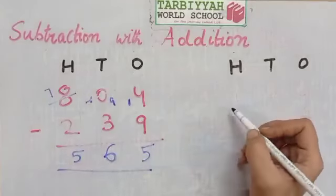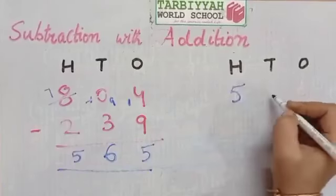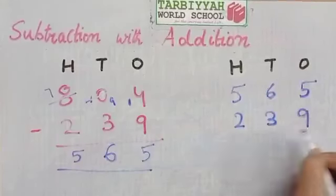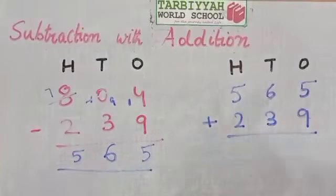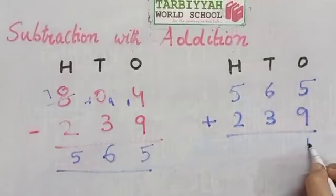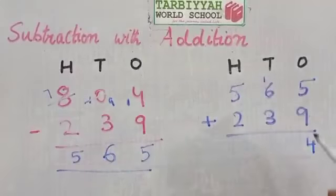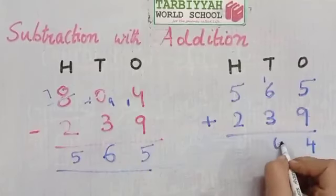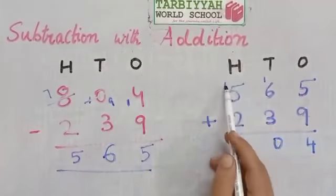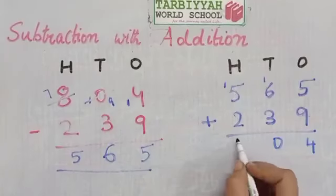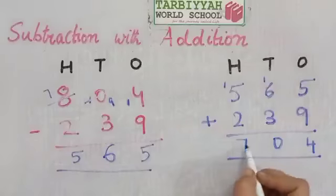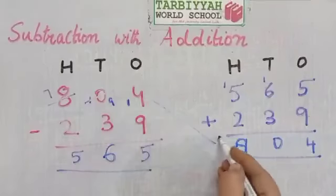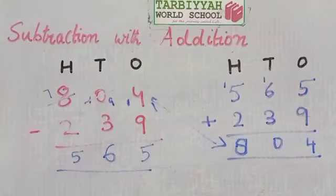Now we write 565 and verify by adding. 5 plus 9 is 14 — write 4 and carry 1. 1 plus 6 is 7, and 7 plus 3 is 10 — write 0 and carry 1. 1 plus 5 is 6, and 6 plus 2 is 8. So the numbers match and our answer is correct.